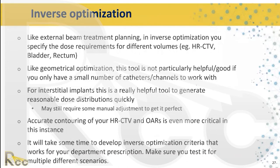Inverse optimization is the latest tool available, similar to IMRT inverse planning — you specify dose requirements for different volumes such as HR-CTV, bladder, or rectum, and the system calculates dwell positions. Like geometric optimization, it is not particularly helpful with a small number of catheters, but can be useful for interstitial implants to generate reasonable dose distributions quickly. However, this must be verified in a manner consistent with the institution's expectations.